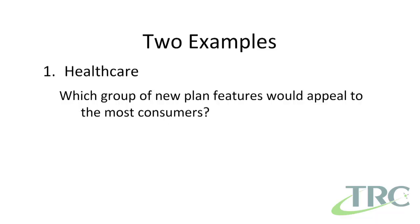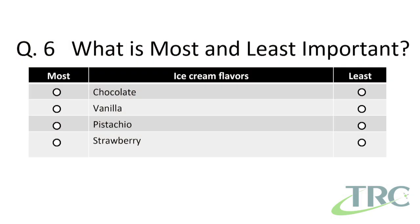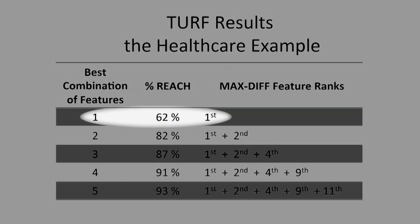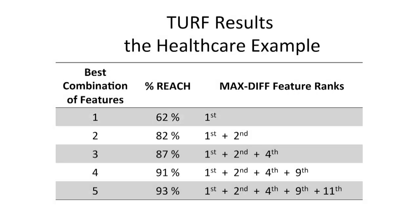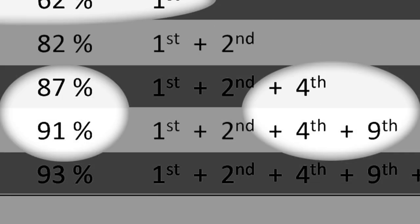Let me give you two examples. The first is for a healthcare client who wanted to know which group of new plan features, from among 14, would appeal to the broadest number of consumers. We used a technique called MaxDiff, which presents consumers with different sets of features and asks them to choose the most and least important features from within each set. We then used TURF to identify the best feature combinations. The feature ranked number one was also the one that reached the greatest number of consumers, but more insightfully, we saw noteworthy increases in plan takers when we included features number four and number nine.